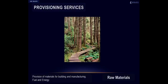Raw materials include materials for building and manufacturing, such as fuel and energy, soil and fertilizer, and timber and fuel wood. As an example, forests provide wood for manufacturing and construction purposes, and oysters, with their shells, provide materials for roads and chicken feed.